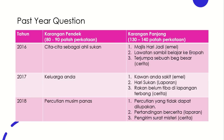These are the past year questions I looked through within the last 5 years. For Karangan Pendek in 2016: cita-cita sebagai ahli sukan, majlis hari jadi, lawatan sambil belajar ke Eropah, and jumpa sebuah beg besar. In the old format, there were 3 options for students to choose, but now it's only 2. For 2017: keluarga anda, kawan anda sakit — write an email, hari sukan laporan, and rakan belum tiba di lapangan terbang — cerita. For 2018: percutian musim panas, percutian yang tidak dapat dilupakan, pertandingan bercerita, format laporan, and pengirim surat misteri — cerita.